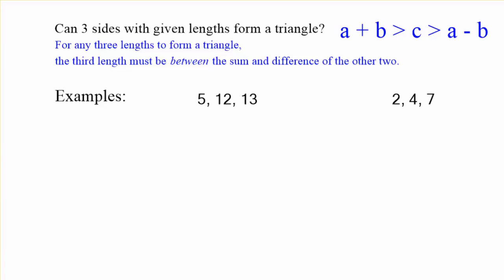Let's go ahead and work out a couple of examples. I've got 5, 12, 13, and 2, 4, 7. And I'm going to randomly pick 13 to be the C, the third side. And let's go ahead and put it in between the sum, 5 plus 12, and the difference. I'm going to go ahead and flip them around. I don't need any negative numbers here. 12 minus 5. So, 13. Is that between 17 and 7? Yes, it is. So, it works.